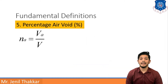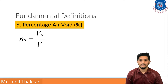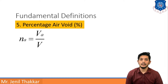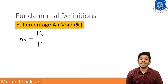The next definition is Percentage Air Void, represented as a percentage and denoted by NA. NA is equal to VA upon V, where VA means Volume of Air and V means Total Volume. So Percentage Air Void is the ratio of Volume of Air to Total Volume. For fully dry soils, all voids are air, so NA equals n (porosity). If the soil is fully saturated, VA equals 0, so NA will be 0.